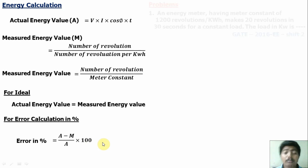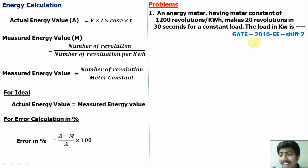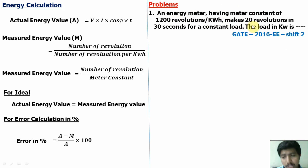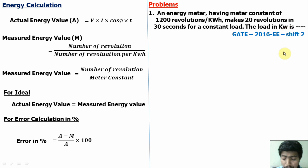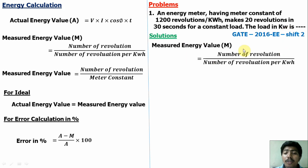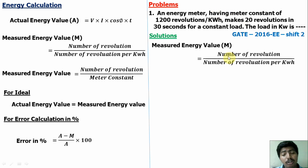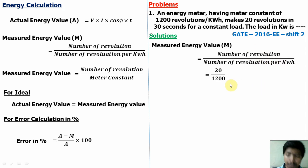Now we will discuss the problems. First question — this question is from GATE 2016 electrical engineering. The meter has a meter constant of 1000 revolutions per kilowatt hour. It makes 20 revolutions in 30 seconds for a constant load. We have to find the power of the load in kilowatt. The measured energy value — using number of revolutions divided by meter constant — gives 20 divided by 1000, which equals 1/60 kilowatt hour.